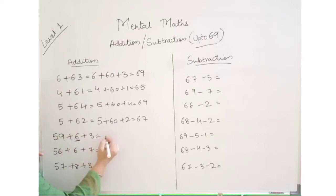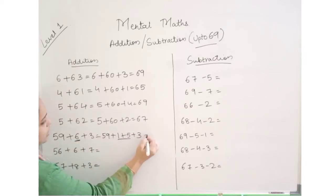For larger digits, we will take the next digit. So 59 plus 1 plus 5 plus 3. This is the expansion: 1 plus 5 equals 6, so 60 plus 8 is 68.